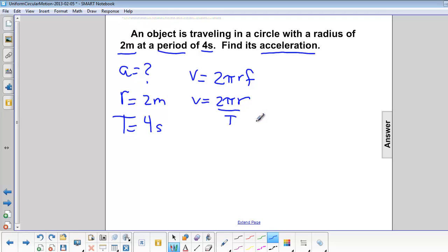This one will help us more since we don't have frequency and we have the period. If we solve for velocity we'll have 2π times 2 meters over 4 seconds.